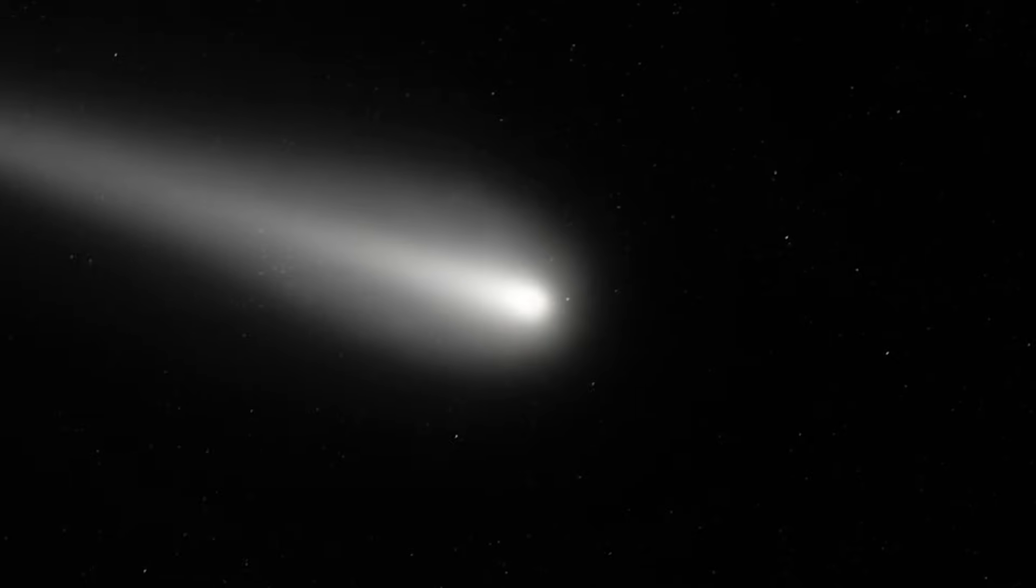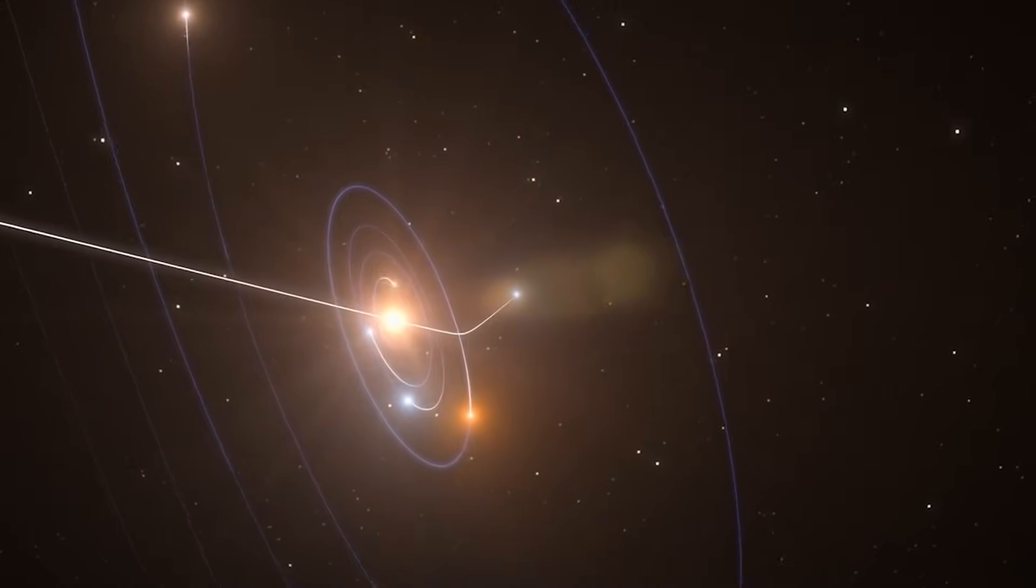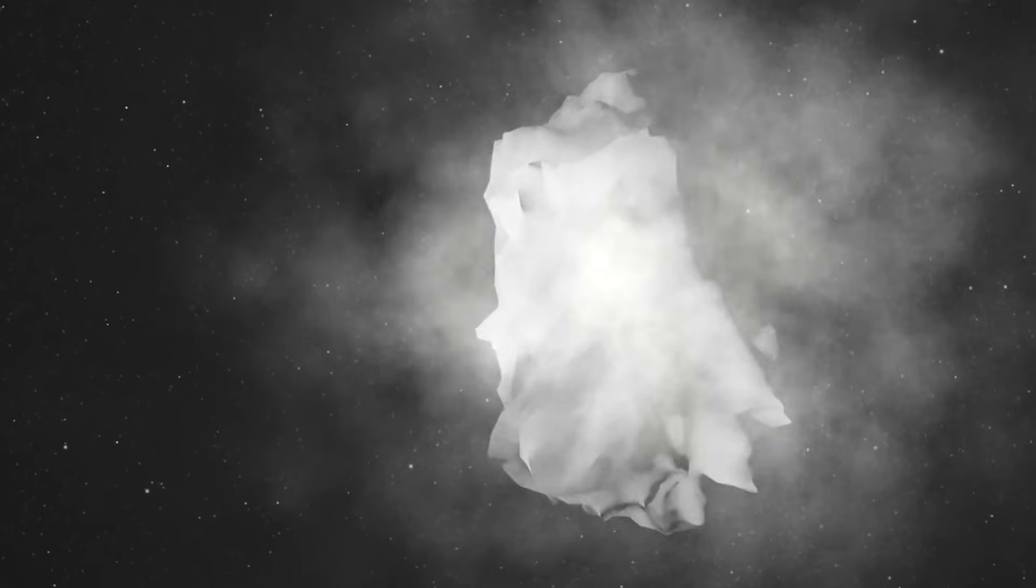All that debris, water vapor, dust, organic molecules is still out there, drifting along the comet's orbital path. And we're going to fly right through it.